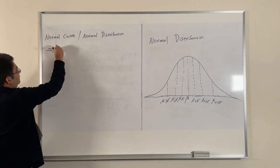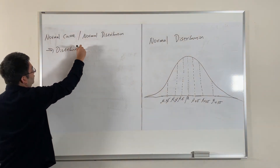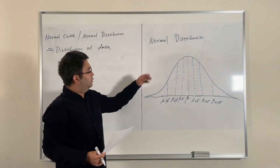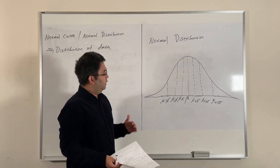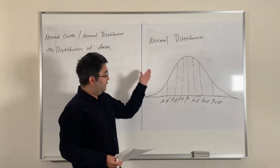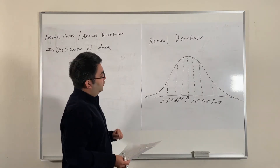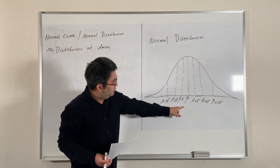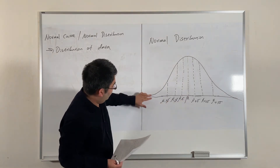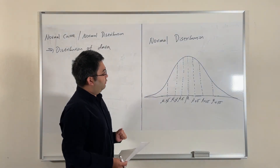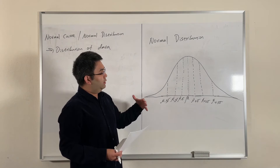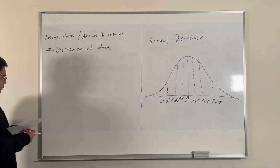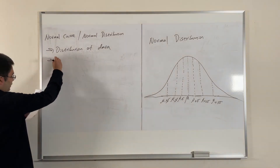Looking at this graph of a normal distribution, the x-axis shows the values and the y-axis shows the frequencies. This tells us how many data points are at each value. I'm intentionally not writing exact numbers, using mu and sigma instead, for a purpose we'll see later.